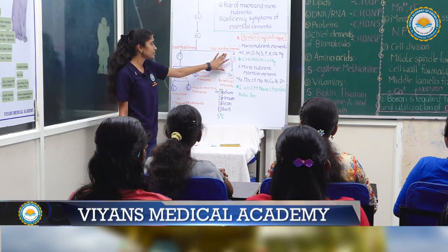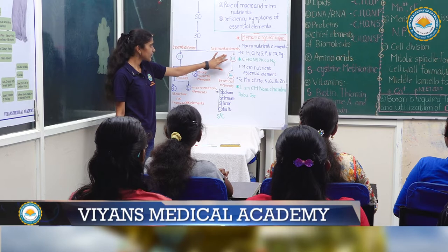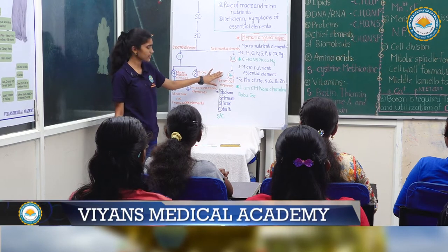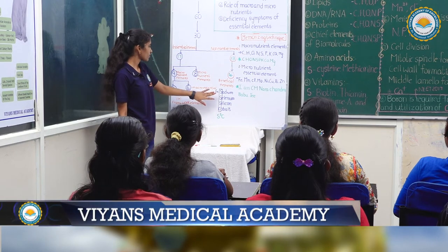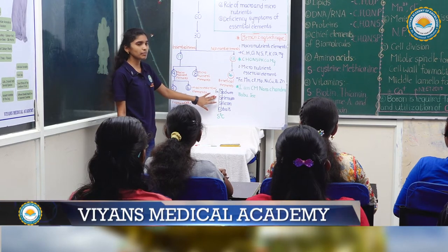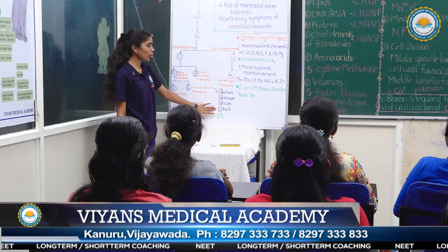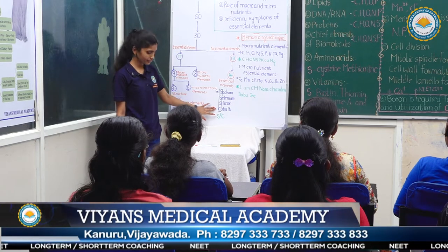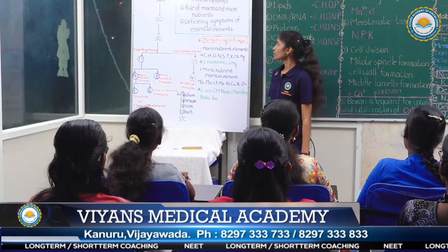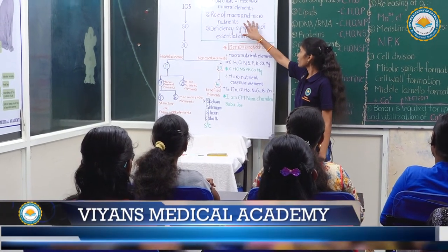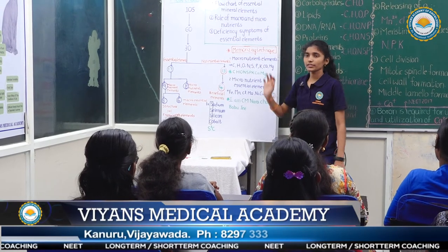The 17 essential elements are divided into 9 macronutrient elements and 8 micronutrient elements. The 9 macronutrient elements are further divided into 3 structural or framework elements and 6 macro essential elements. Non-essential elements include 4 beneficial elements: sodium, selenium, silicon, and cobalt.